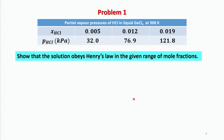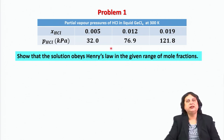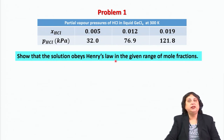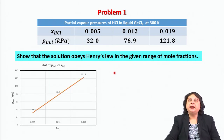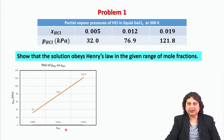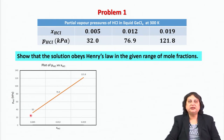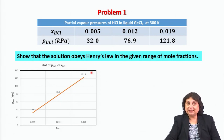Here is a data table which shows the partial vapor pressure of HCl in liquid germanium chloride at 300 Kelvin. The task is to show that this solution indeed obeys Henry's law in the given range of mole fractions. I make a plot with the mole fraction of HCl on the x-axis and the partial vapor pressure of HCl on the y-axis, and this gives a linear plot. But the question is: does it mean that the solution obeys Henry's law?